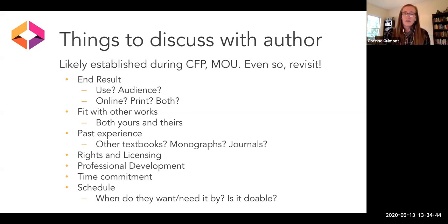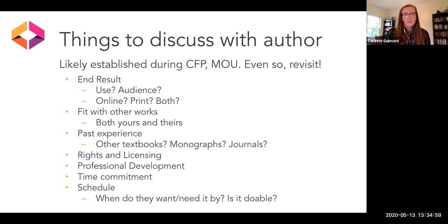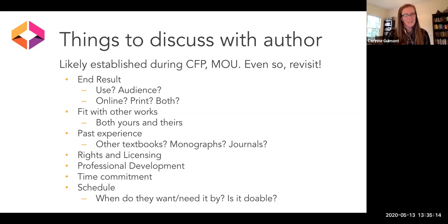Rights and licensing: I'm sure you've all talked about this plenty, but making sure again and again that the author is aware of rights and licensing issues — especially as they start writing and find images or other content they want to build off of — making sure they're clear on the terms of copyright licenses and Creative Commons licenses, and how to either incorporate or build upon those. It's happened several times that in the middle of writing a book an author says 'I want to use this image,' and we say 'that's not openly licensed,' and they say 'oh, but I'm just going to use it anyway.' No — really, it's not open, it's not available. So revisiting that conversation as much as possible is always a good thing to do.